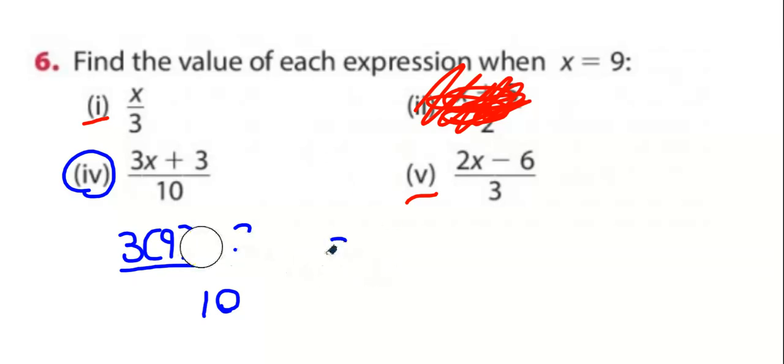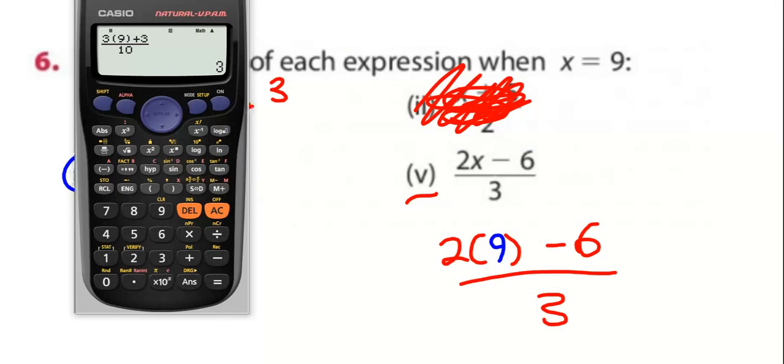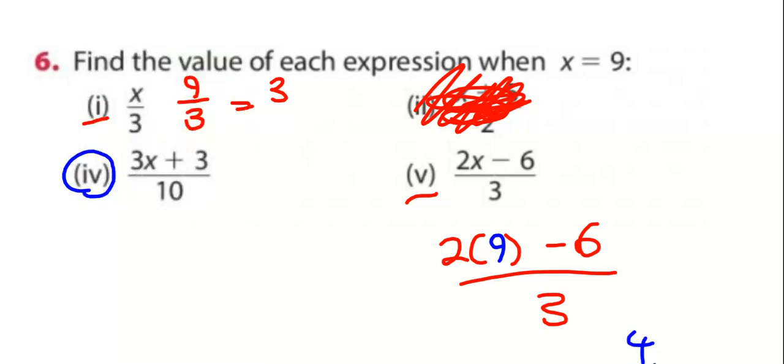So, most of you know the first one. You replace X with nine. Nine over three? Three. The next one, two brackets minus six all over three. What number do you put in here? Nine. Then you go to the calculator, press the fraction button first, two bracket nine minus six all over three, and you get an answer of four.